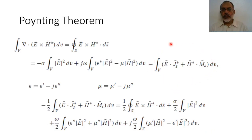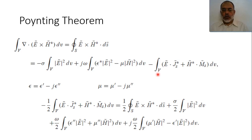This last term corresponds to the power from the source. The power delivered from the source is the integral over the volume of the electric field dot the source current conjugate plus the magnetic field dot M_source dV. We multiply everything by one-half because we are working with root-mean-square values, so the factor 1/2 applies to the integration corresponding to the power coming from the current source, either the electric source or magnetic current source.